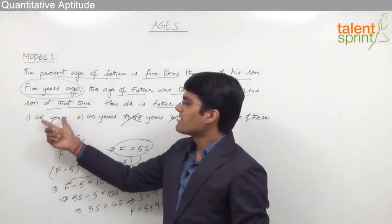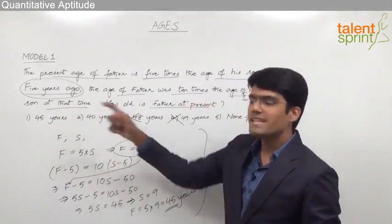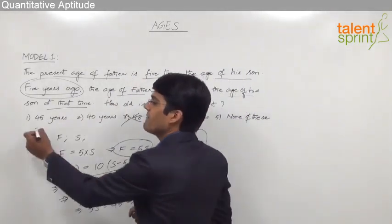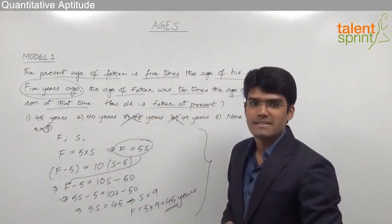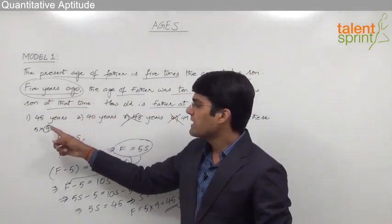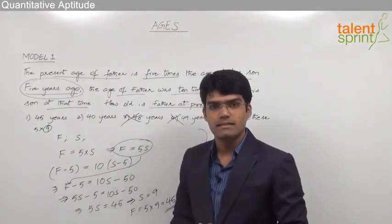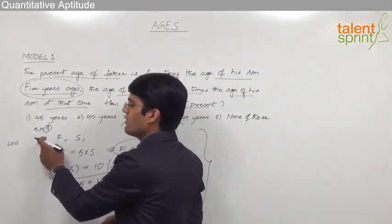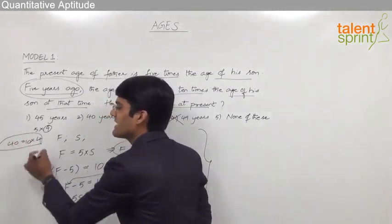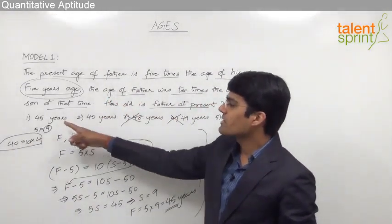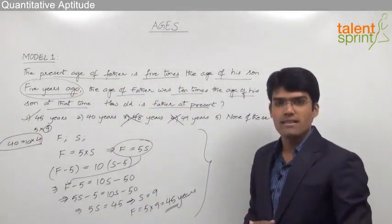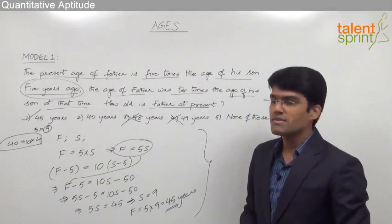Let us now take option 1 and verify the second condition. If father's age is 45, son's age should be 9 years, since 45 equals 5 into 9. The second statement says 5 years ago, father's age was 10 times the son's age. 5 years ago, father's age would be 40 and son's age would be 4. Clearly, 40 is 10 times 4, which satisfies statement 2. So option 1 satisfies both conditions and is the correct answer. This is how we eliminate wrong answers and verify the correct one from the given options.